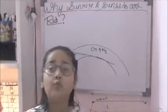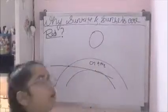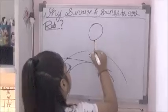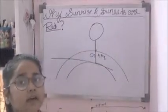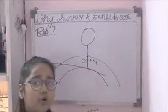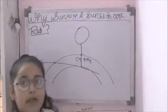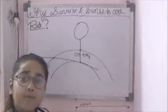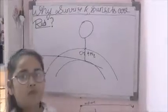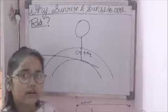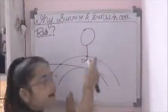Now let's see what happens at noon. At noon, the sun is overhead, so sunlight travels the shortest distance through the atmosphere. Because the distance is short, the light will not be scattered significantly. So all the colors — violet, indigo, blue, green, yellow, orange, and red — reach the observer's eye in the right proportion, and you see white. So the sun appears white at the time of noon.